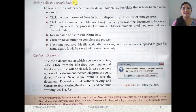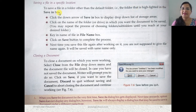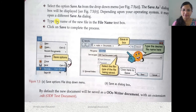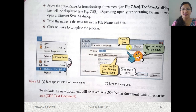Saving a file in a specific location: if you want to save it to a specific folder, click the down arrow of the Save In box to display the drop-down list of storage areas. You can see the Save In box — when you click the arrow, a list of directories and folders will open. You can choose the specific path where you want to save the document.